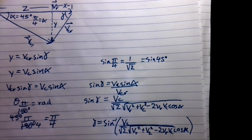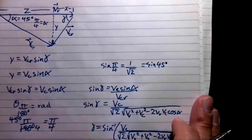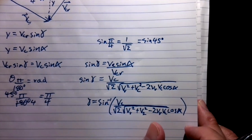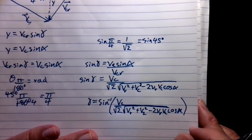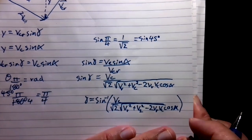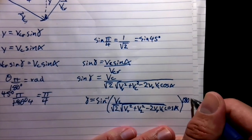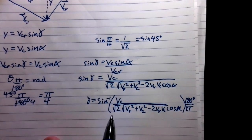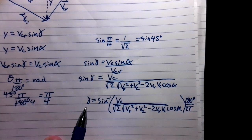We have done it. Let's just confirm that that is the correct answer. Yes, it is the correct answer. One thing to note is that this is going to give you the answer in radians. So if we want to convert into degrees, we will have to multiply by 180 degrees divided by pi. That's our conversion factor, and that's going to give us our angle in degrees.